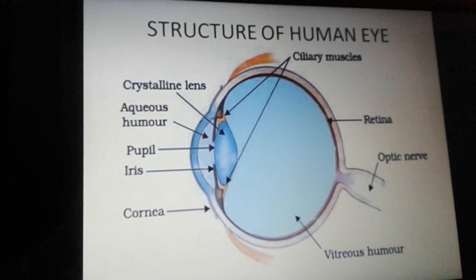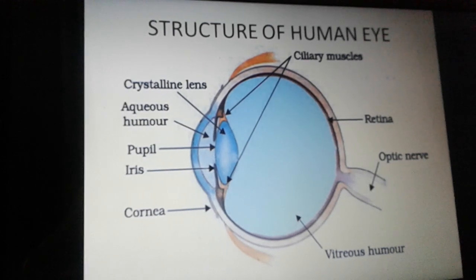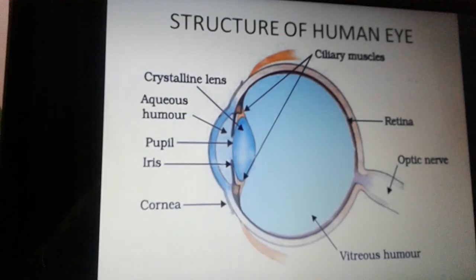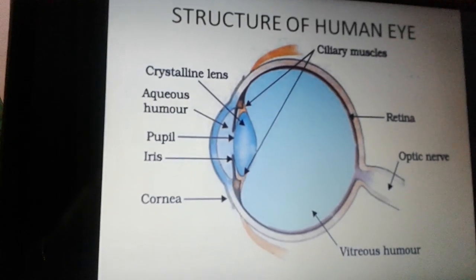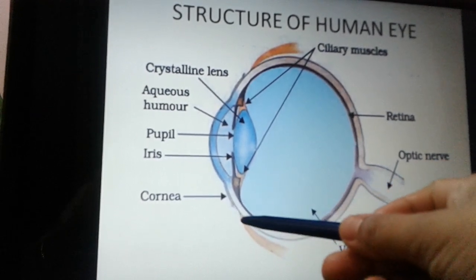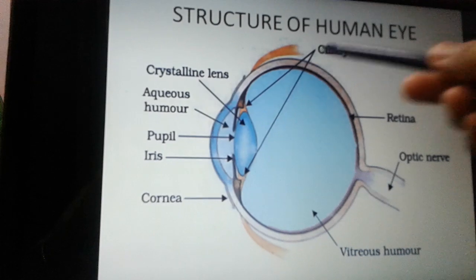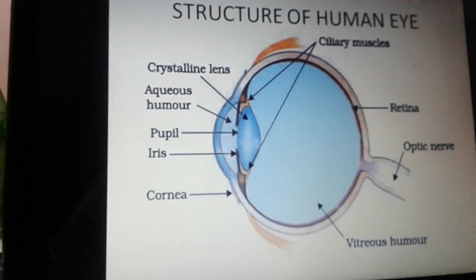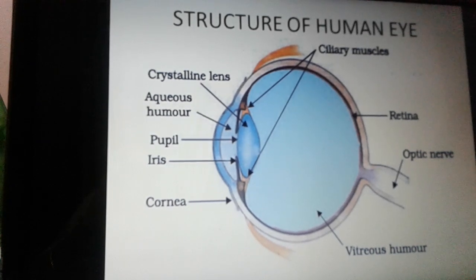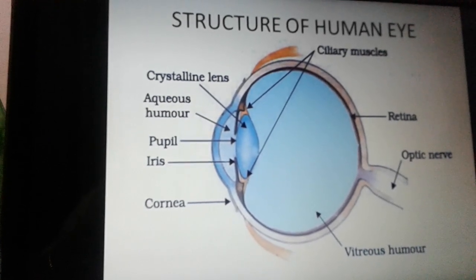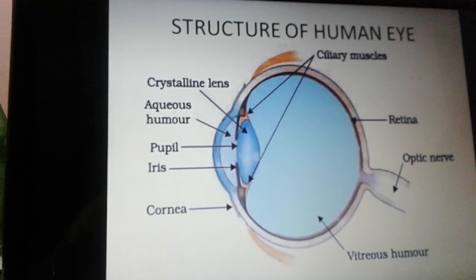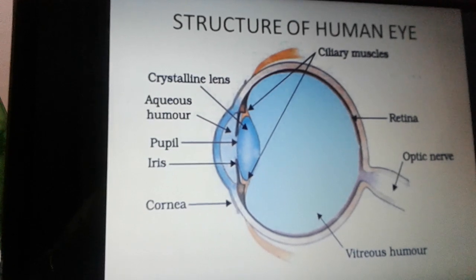We are going to see one by one the things that are labeled, and we are going to see the function of the human eye. The first point is the cornea. You can see here this represents the outermost layer — this whole layer represents the cornea. It is the outermost layer of the human eye. The function of the cornea is to protect the eye from dust particles, and it also participates in the process of refraction. So the first level of refraction happens at the cornea.